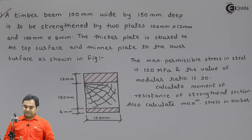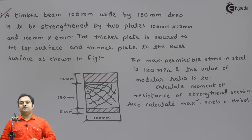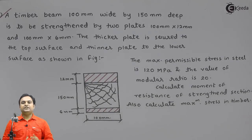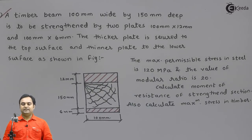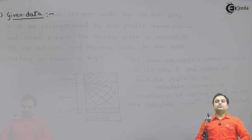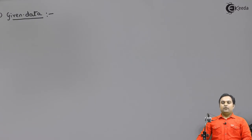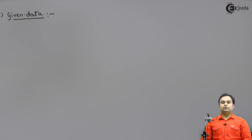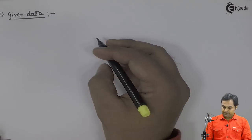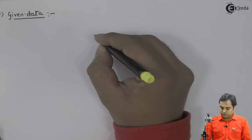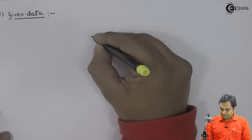This is the problem of the flitch beam. We need to write the data first, so let us start. Whatever diagram they have given, we have to draw it again. I am drawing the diagram of a flitch beam.